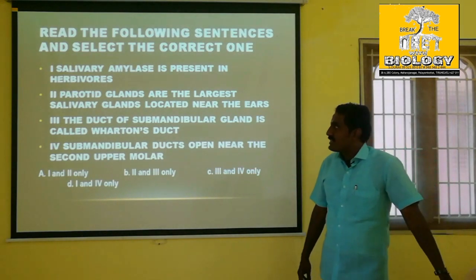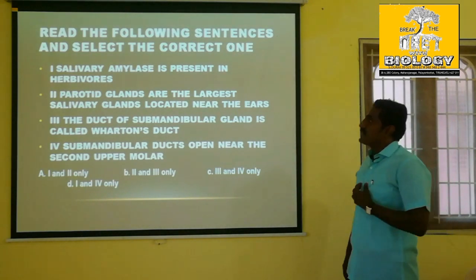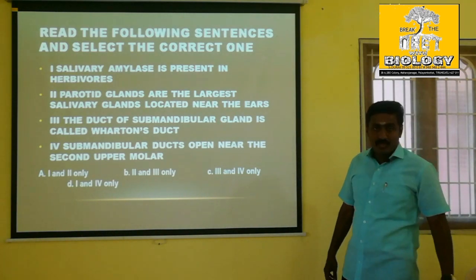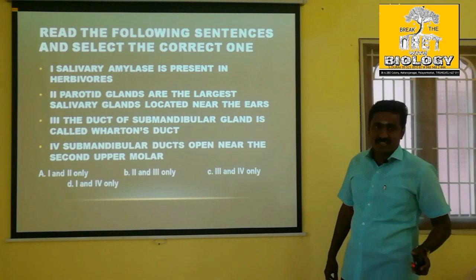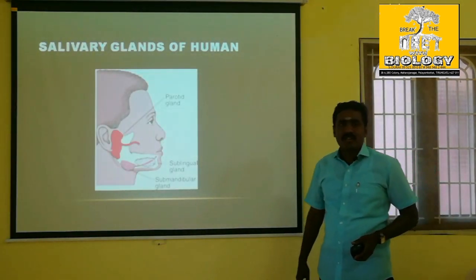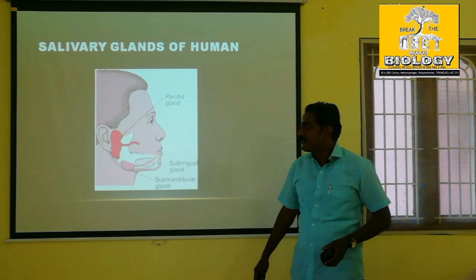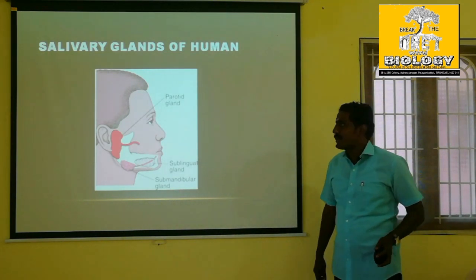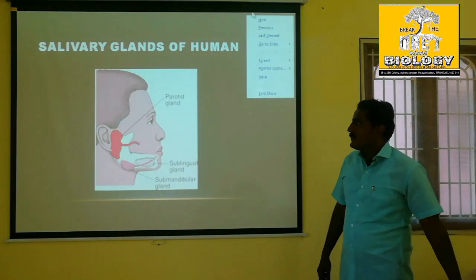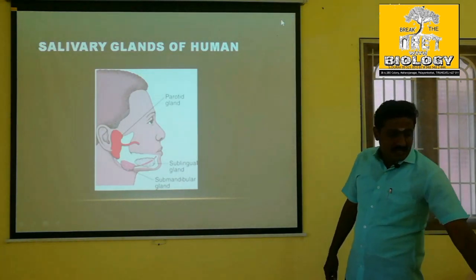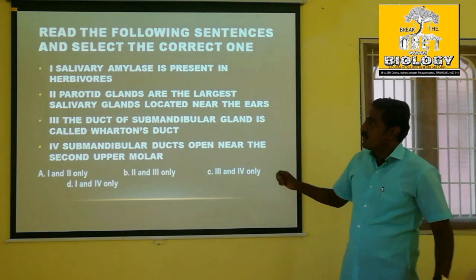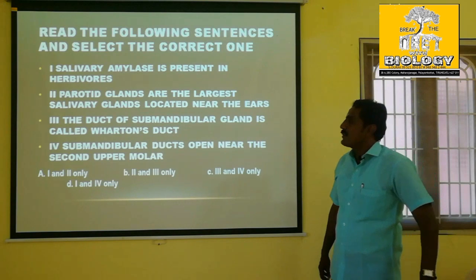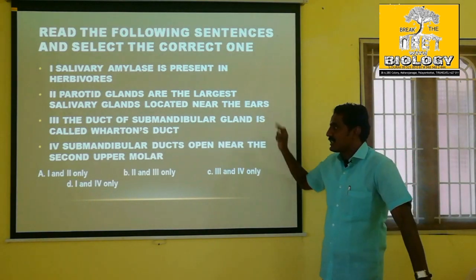Parotid glands are the largest salivary glands, located near the ears. The next slide shows the parotid gland, which is nearby the ears. So the second statement is a correct statement.